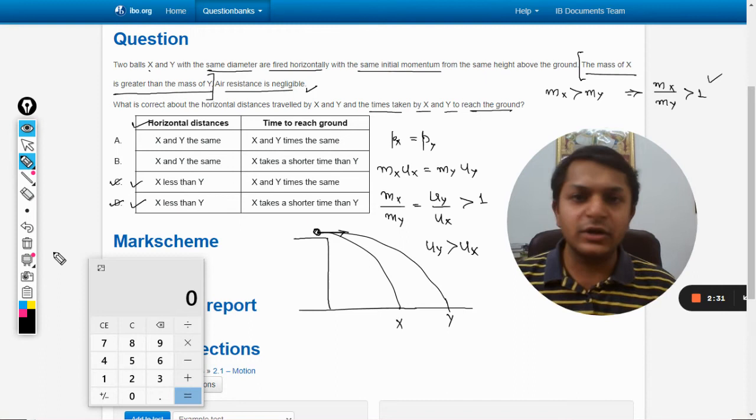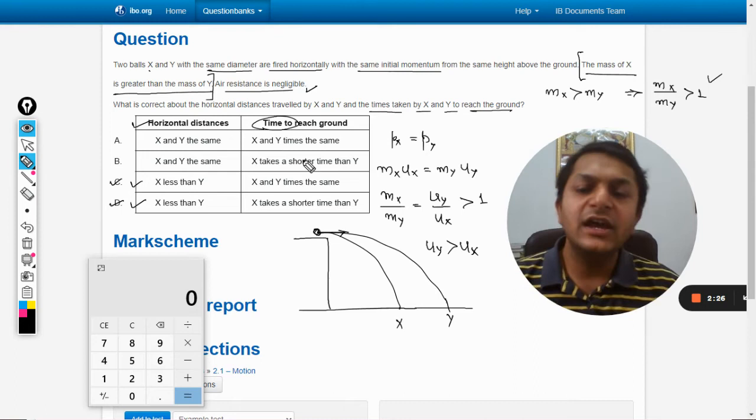So according to the option we can see that C and D can be the correct answers. Either the correct answer will be C or it will be D. So we have to see the second part of the question, that is time to reach the ground.